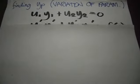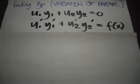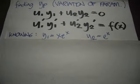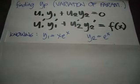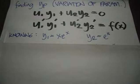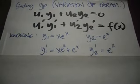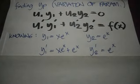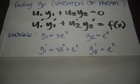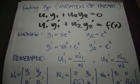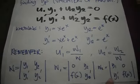Using variation of parameters in finding yp, we are given by this equation. We have already an equation for y1 and y2. Using and getting the first differential we get these equations. Remember in variation of parameters we'll be using Wronskian and we'll be utilizing these equations.